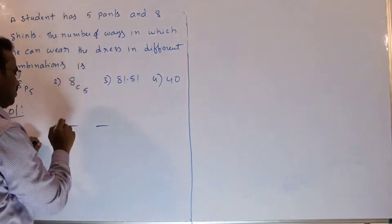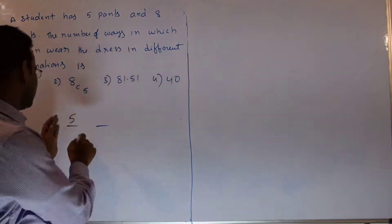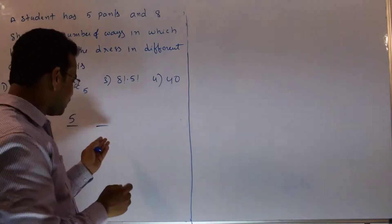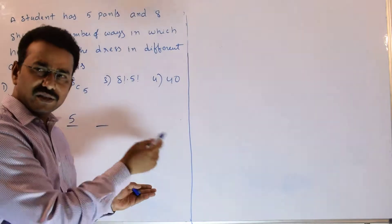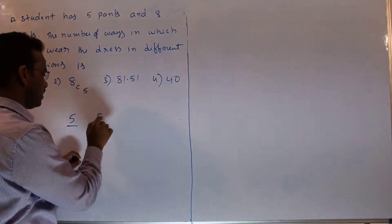How many ways can I choose the pant? 5 ways. This task is over. What is the next task? Interrelated task means you have to finish these two tasks. How many ways can I choose the shirts? 8 ways.